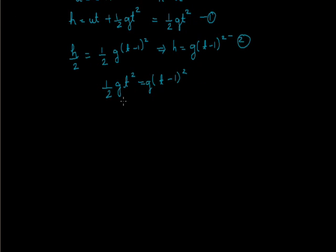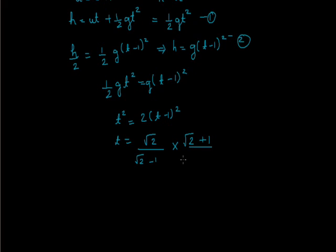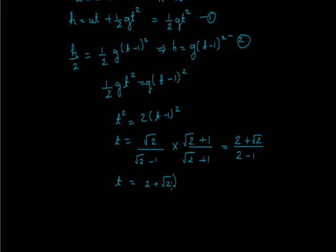On solving, t squared equals twice of t minus 1 whole squared, which gives t equals root 2 over root 2 minus 1. Rationalizing by multiplying by root 2 plus 1 over root 2 plus 1, using the identity a squared minus b squared — which gives 2 minus 1 equals 1 in the denominator — we get t equals 2 plus root 2 seconds. This is the total time taken by the body to cover the whole distance h.